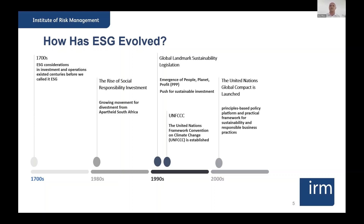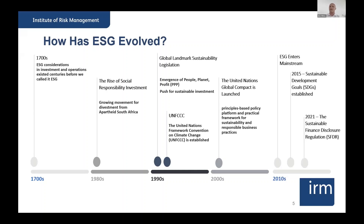In the 2000s, the UN Global Compact was launched — 10 principles covering human rights, labour, the environment, and anti-corruption — for organizations to start thinking differently about not just making money, but doing good in the world and being a positive impact on society. In more recent years, ESG became a massive mainstream topic. In 2015, the Sustainable Development Goals were launched: 17 goals by the UN to help companies and people think about how we can do good in the world, not just about making profits.